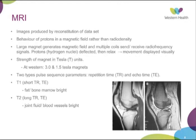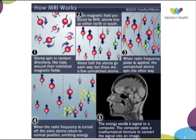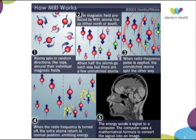MRI images are produced by reconstruction of a dataset, looking at the behaviour of protons in a magnetic field rather than radio density as with x-ray and CT. The MRI uses protons — hydrogen ions — and the magnetic field causes them to line up. A radio frequency pulse excites the protons, causing them to spin in different directions. Once the radio frequency stops, the protons realign and relax back to equilibrium, emitting a signal which the MRI picks up to produce the images. Different protons in different tissues relax and excite in various ways, producing different image contrasts.